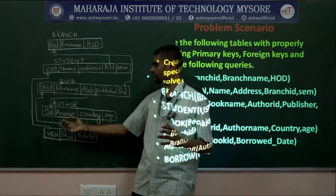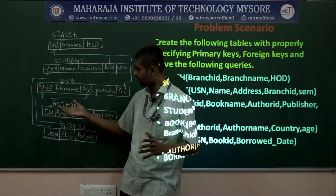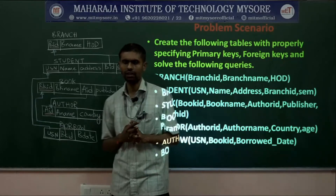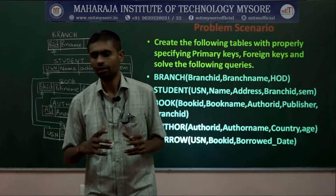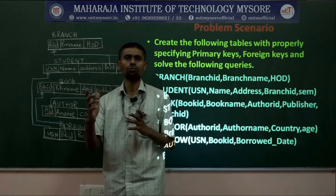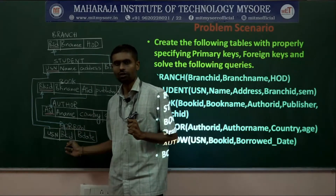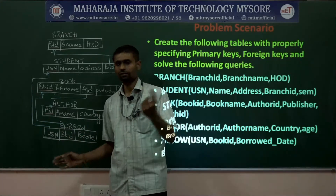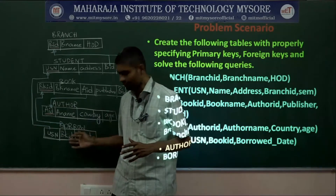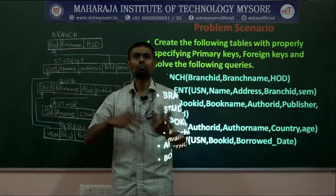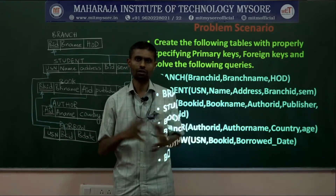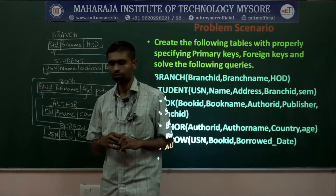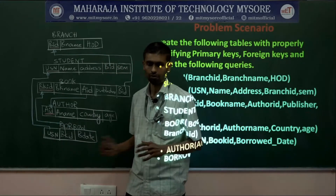All authors are recorded in the author table, where AID is the primary key. Students go for borrowing books, and which student borrowed which book on what date is recorded in the borrow table. The borrow table allows one USN to borrow many books either on the same date or different dates, and a book can also be borrowed by many students.